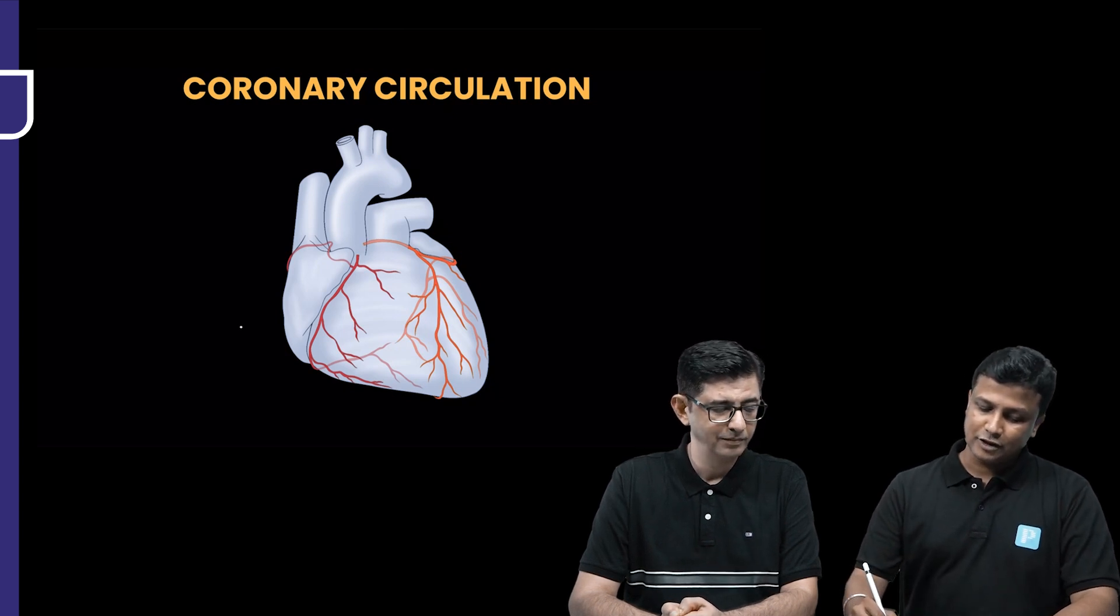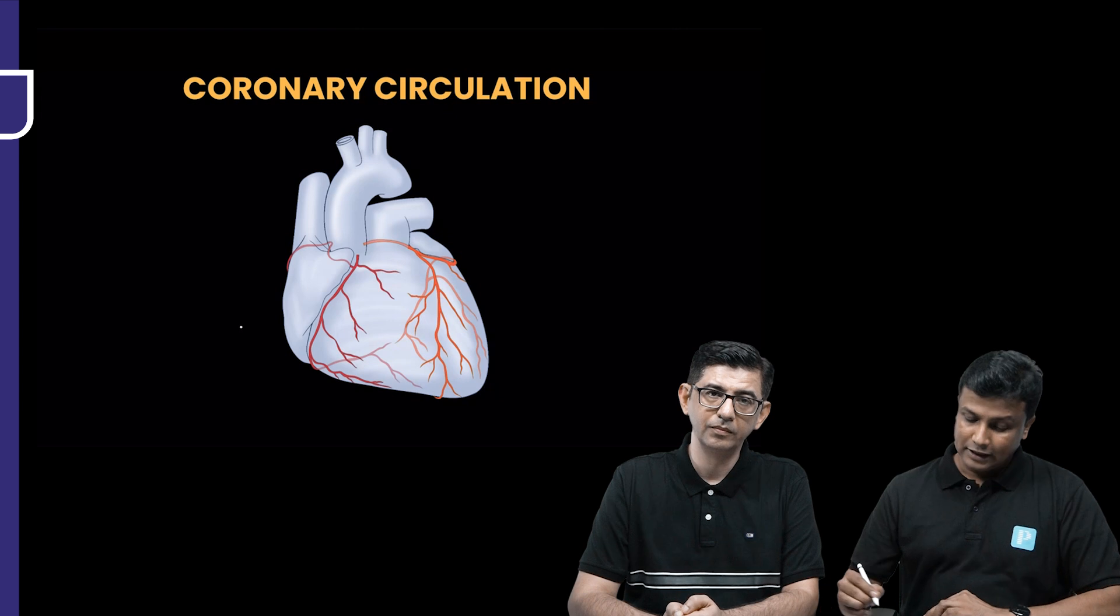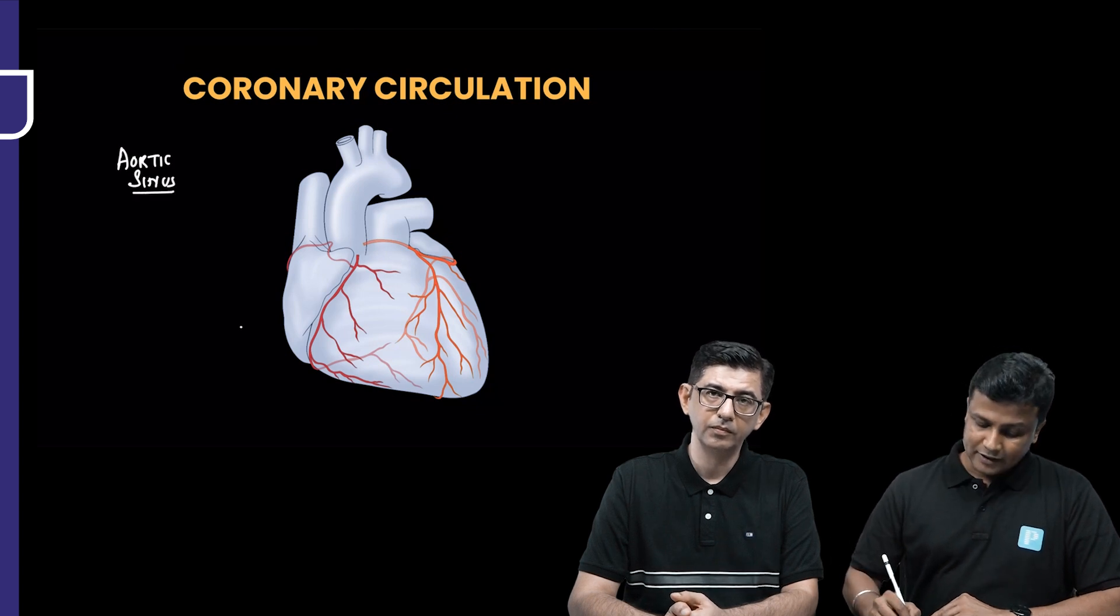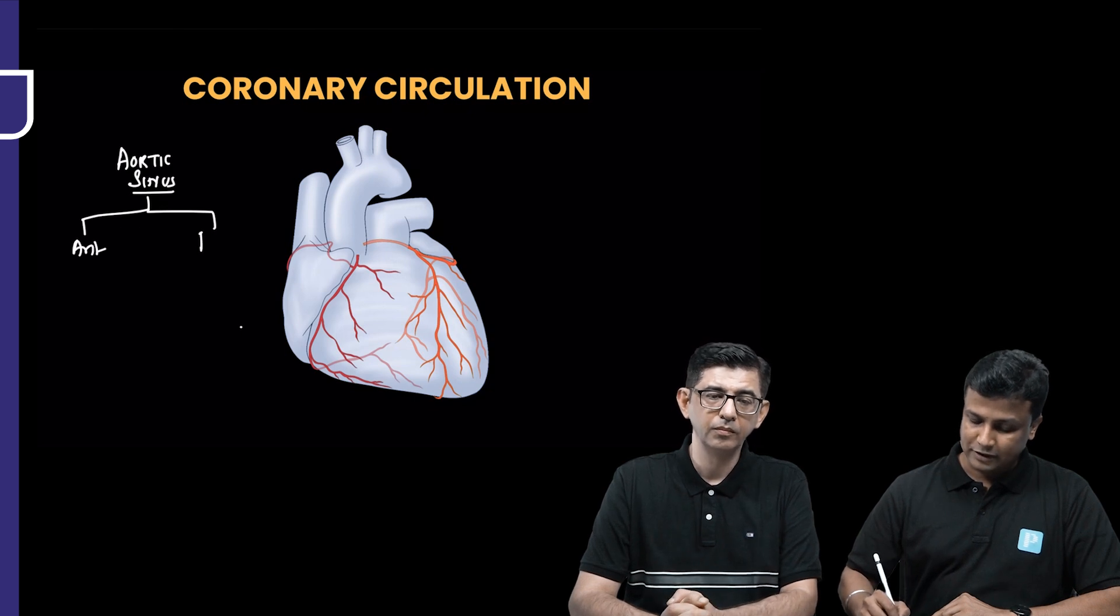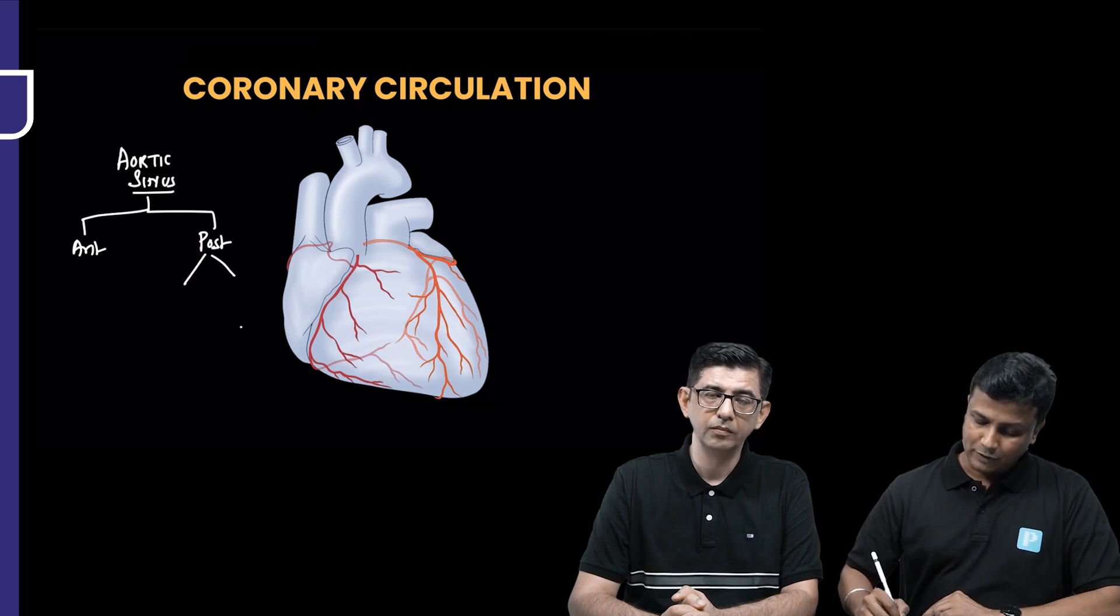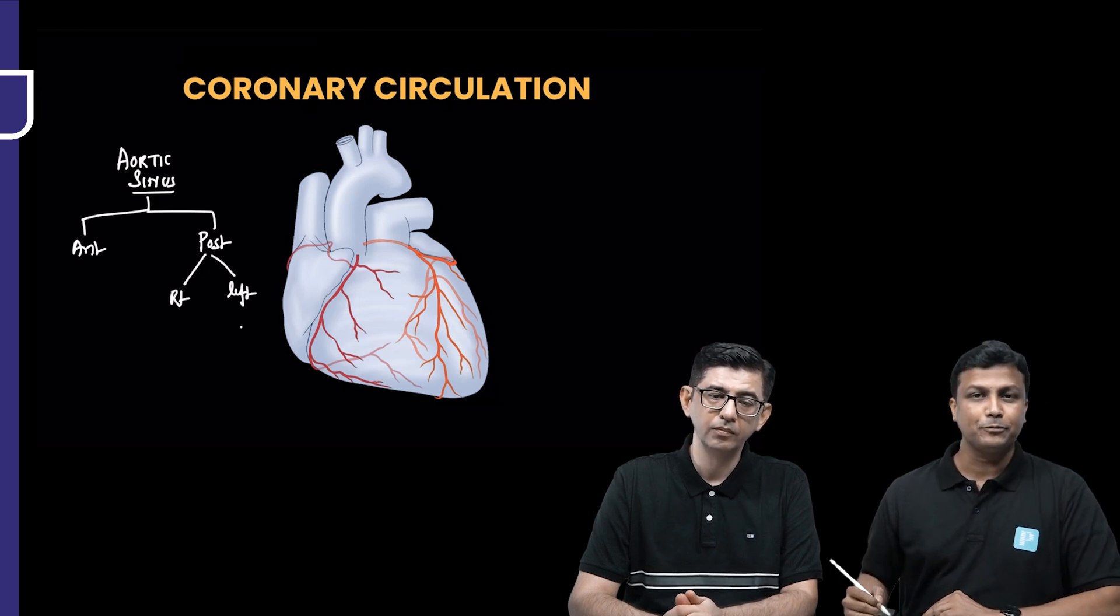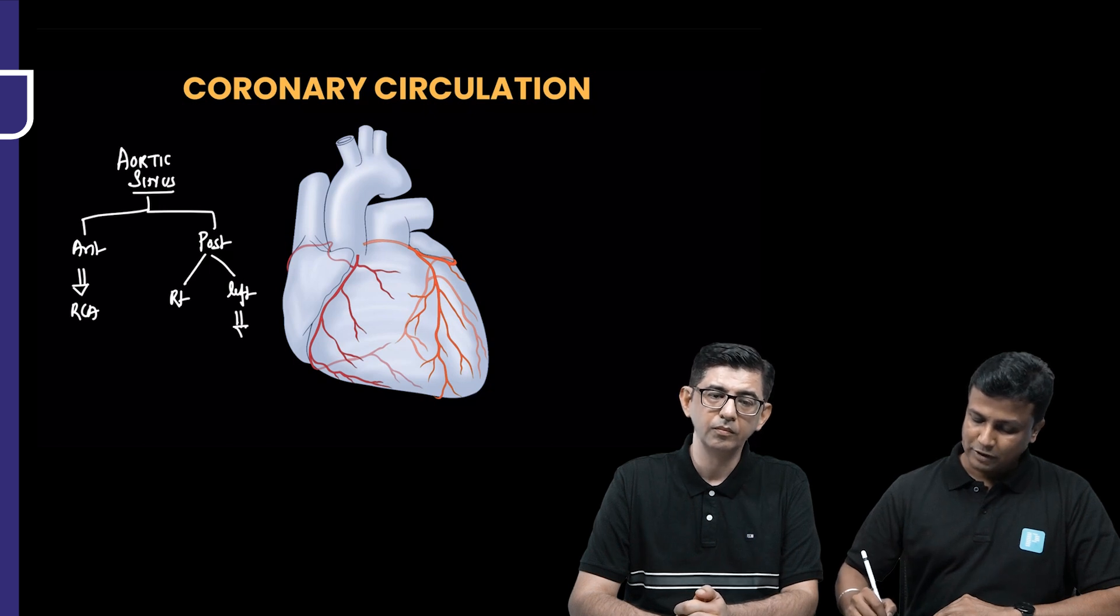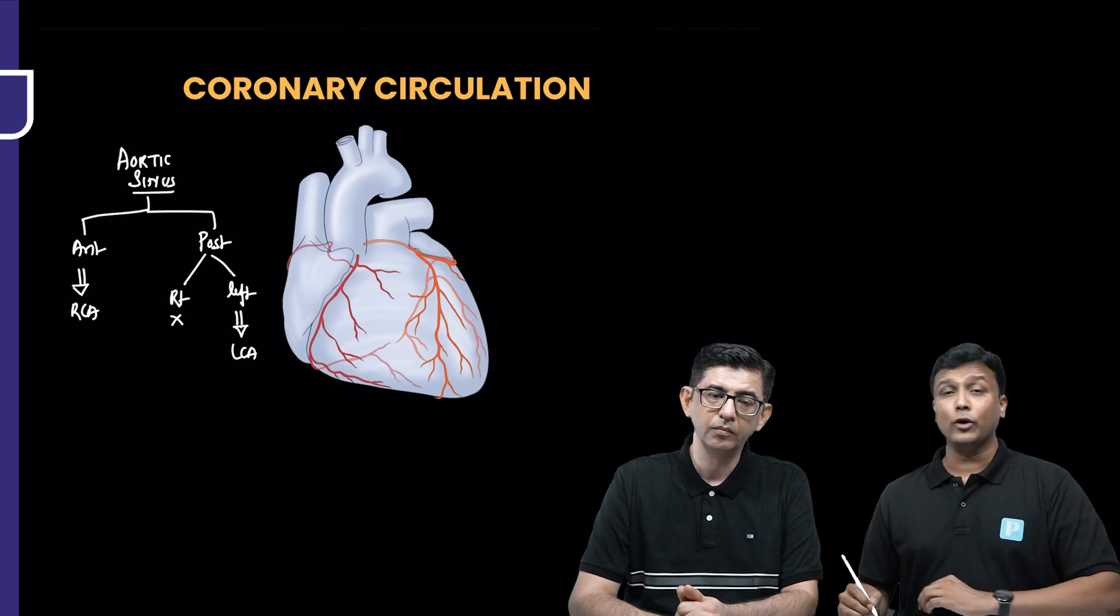So first of all, when you're learning about the coronary circulation, you should know that the coronary arteries are going to begin from aortic sinus. Got to remember this word, aortic sinus. And aortic sinuses, remember that there will be anterior aortic sinus and then there will be posterior aortic sinus. There will be one anterior and there will be two posterior. Because we have got two posterior, one will be right posterior, another one is the left posterior. Now, from this table, you can quickly learn here that anterior aortic sinus is the one which will give rise to right coronary artery. Left posterior aortic sinus will be the one which will give rise to left coronary artery. And nothing arises from the right posterior. Therefore, it is known as the non-coronary sinus.